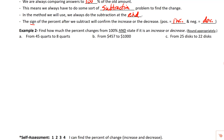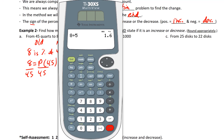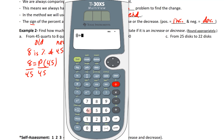Find how much the percentage changes from 100% and state whether it's an increase or decrease. It changed from 45 quarts to 8 quarts. So 45 quarts is the old amount and 8 quarts is the new amount — the new amount is a lot less, so this will be a decrease. We write: 8 equals some percent times 45. Dividing both sides by 45, we do 8 divided by 45 and get 0.1777 continuing.